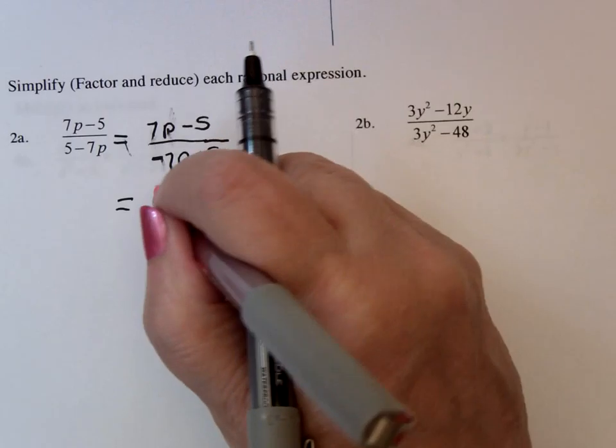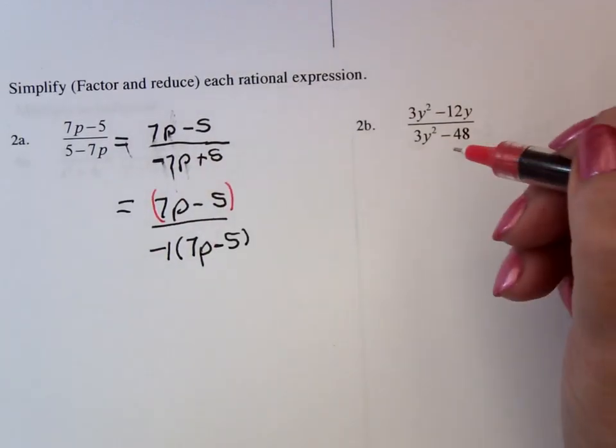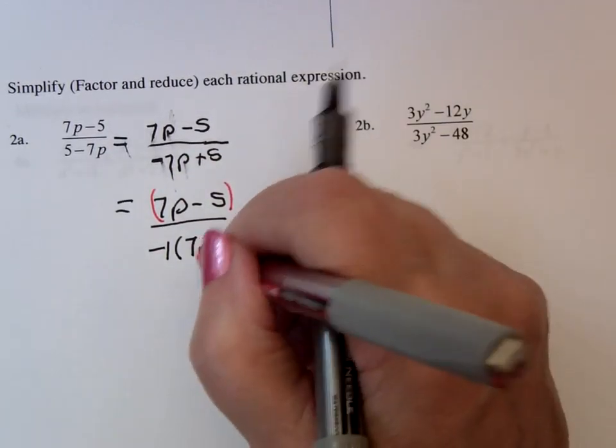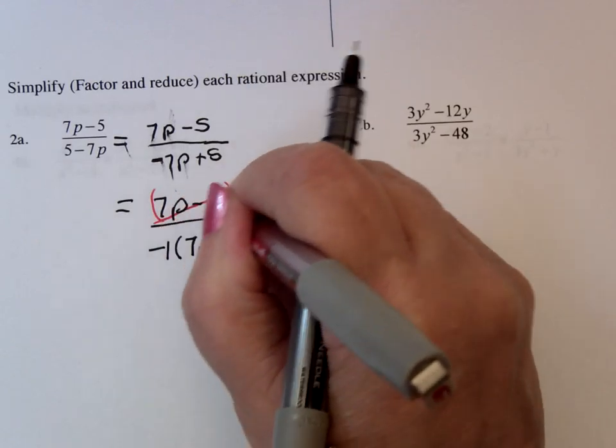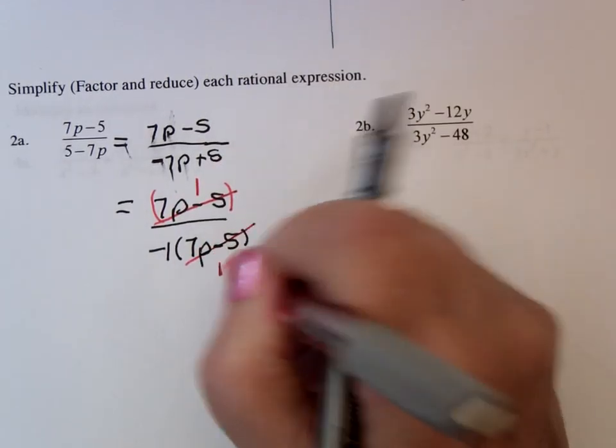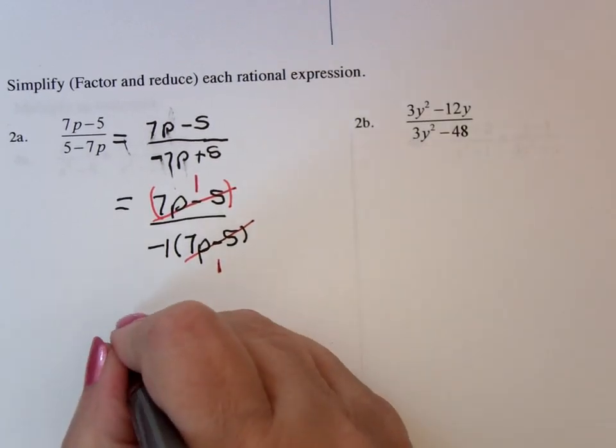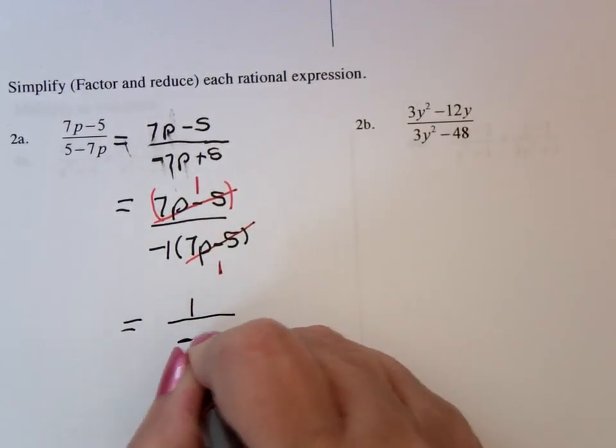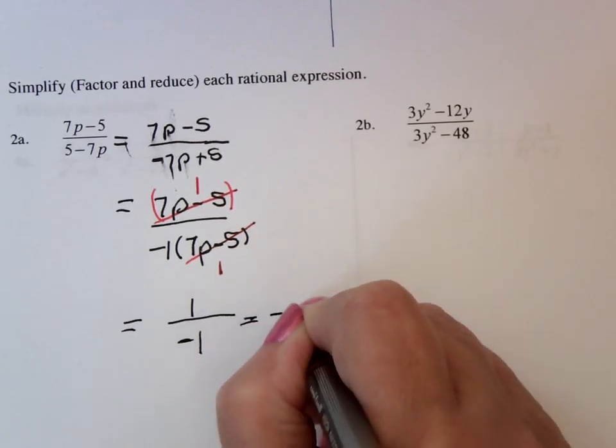Now what you notice is that the numerator is p minus 5, the denominator is p minus 5. p minus 5 divides p minus 5 once. So this becomes 1 over negative 1 or negative 1.